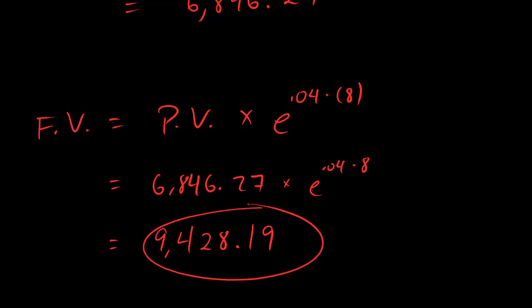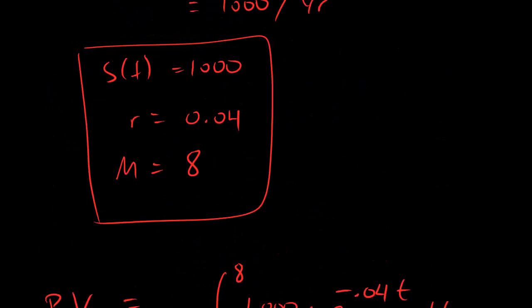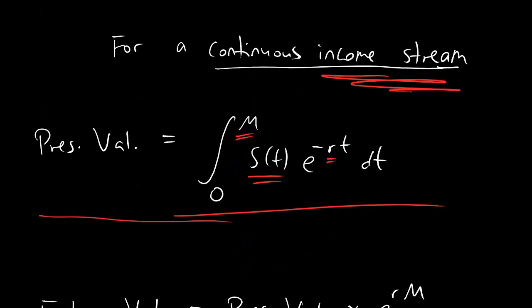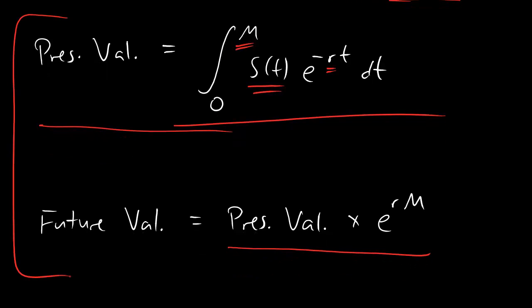The ideas are pretty simple. If you're asked for present value or future value involving an income stream, you're going to use these new formulas. If you need to find future value, first find present value, then multiply by that E to the RM term. Be careful to only use these formulas when the problem says income stream. If the problem says you get a single chunk of money, use the present value and future value formulas from chapter 1 — you don't need this new stuff.